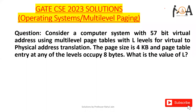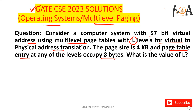One of the questions in CS 2023 GATE exam from operating system — the topic was multi-level paging. The question was: consider a computer system with a 57-bit virtual address using multi-level page tables with L levels for virtual to physical address translation. The page size is 4KB and the page table entry at any level occupies 8 bytes. What is the value of L?